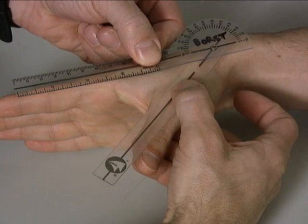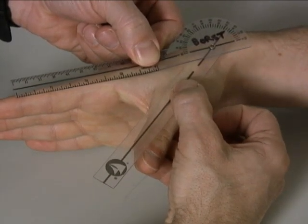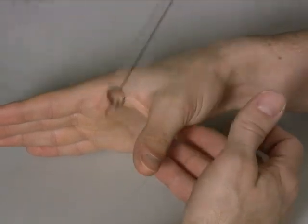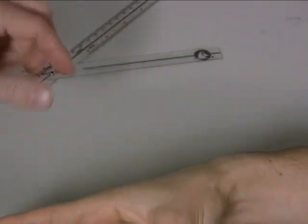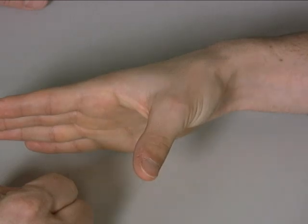In palmar abduction, that tends to fall about at the scapho-trapezial joint. In this case, I moved a little. There we go. We have about 40 degrees of palmar abduction at the thumb carpometacarpal joint.